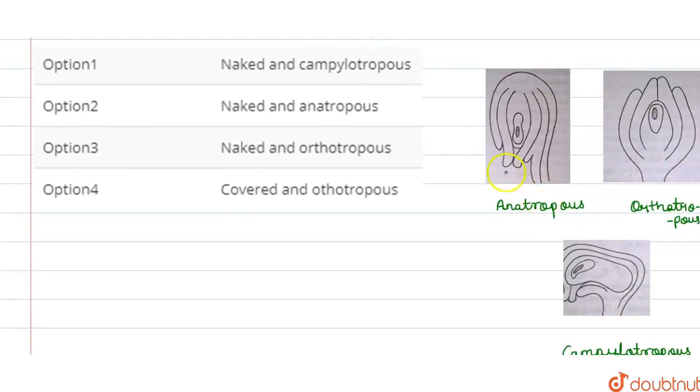Look, what is anitropes? This is a micropylar end. This is a chalazal end. So, this is completely inverted. The micropylar end is here. The chalazal end is here. And the micropylar end is near to the hilum.